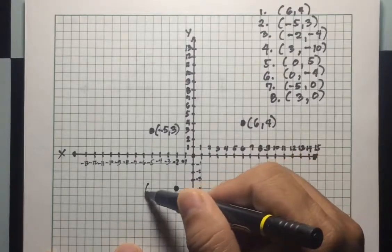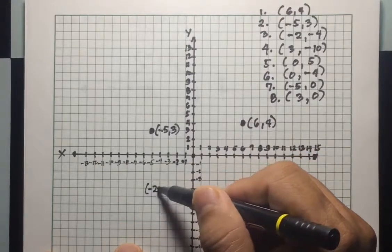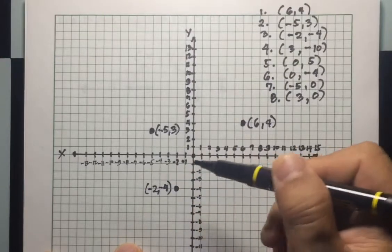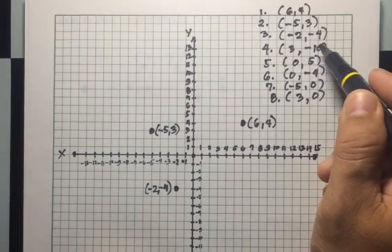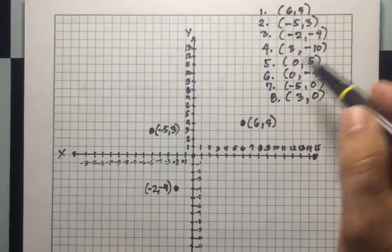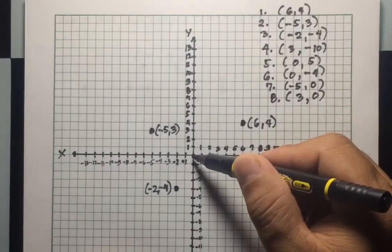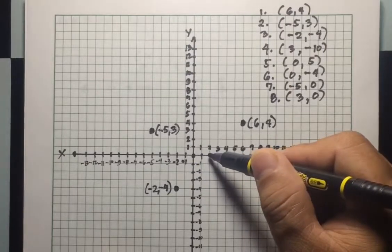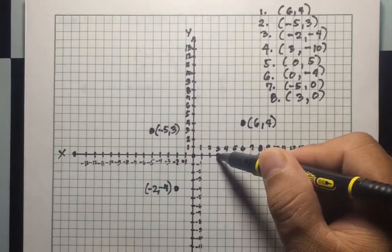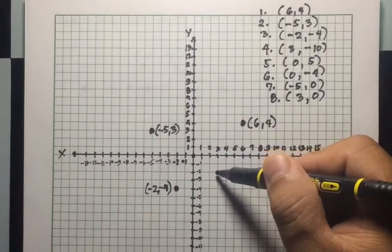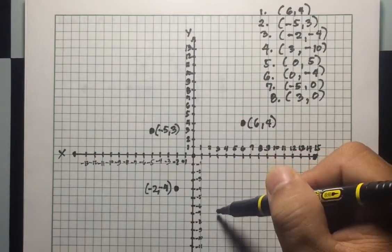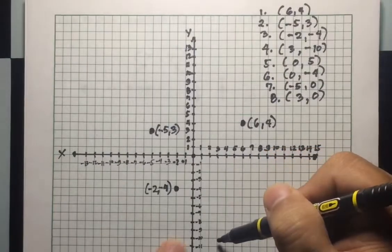For number four, the point is (3, -10). X is positive so move three units to the right from zero: one, two, three. Y is negative ten so move downward ten units: one, two, three, four, five, six, seven, eight, nine, ten. This is point (3, -10).